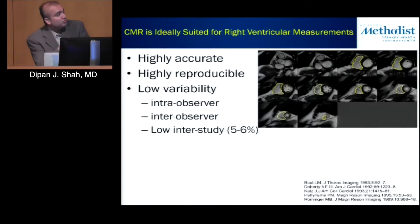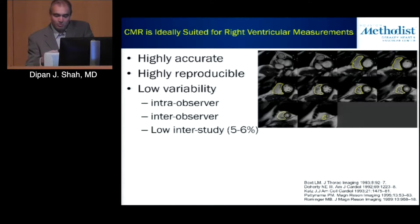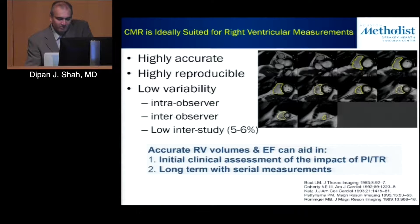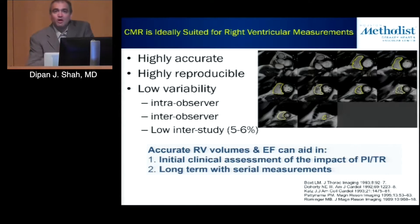The data with CMR from numerous studies shows fairly accurate and reproducible measurements with intra- and inter-observer variability on the order of about 5% to 6%. That contrasts a little with the LV, where inter-study variability with CMR is about 2% to 3%. The RV is always going to be more challenging regardless of imaging modality, but CMR still provides reasonable ability to derive RV volumes and function, and many guidelines reference CMR as a tool for initial clinical assessment and long-term serial follow-up.